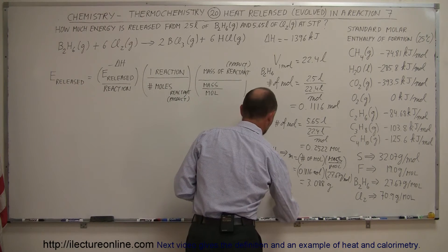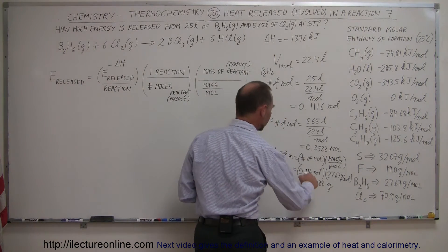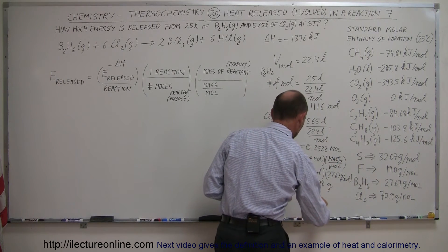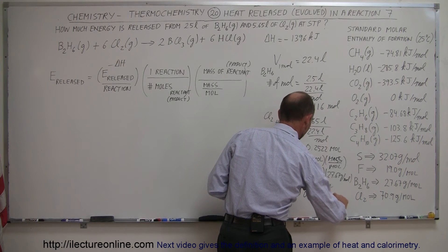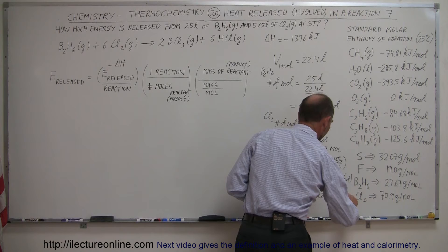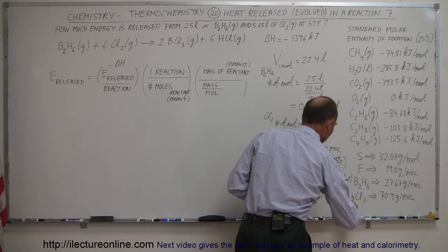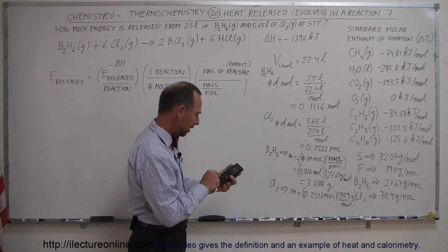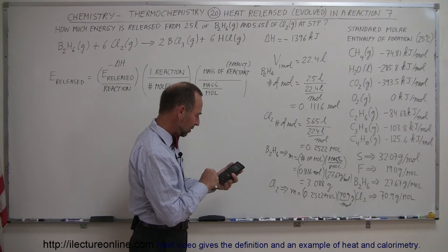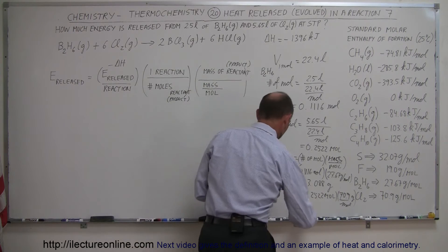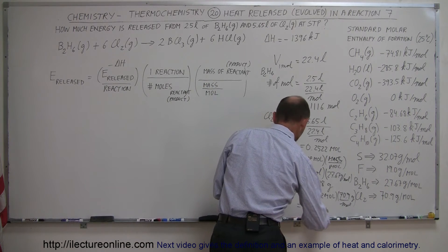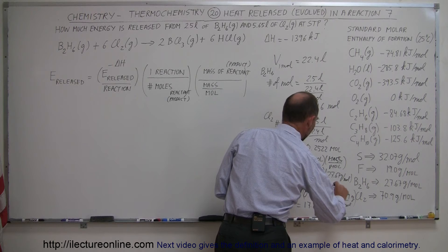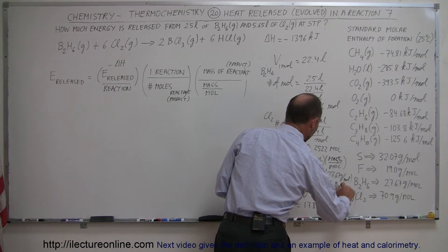We do the same for chlorine gas. Mass equals 0.2522 moles times the molar mass of 70.9 grams per mole. So 0.2522 times 70.9 equals 17.88 grams of chlorine gas, and 3.088 grams of diborane.